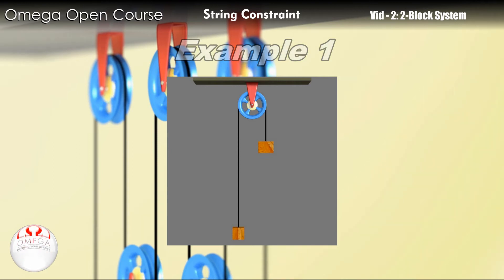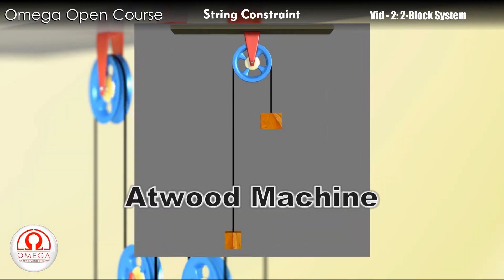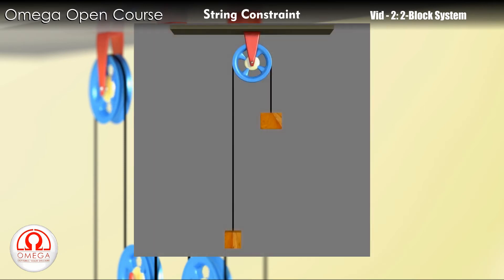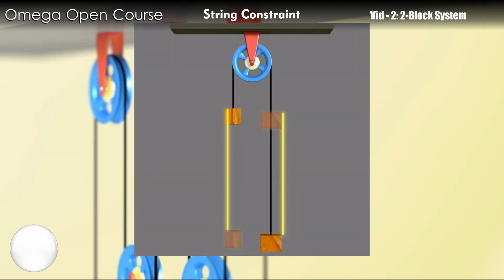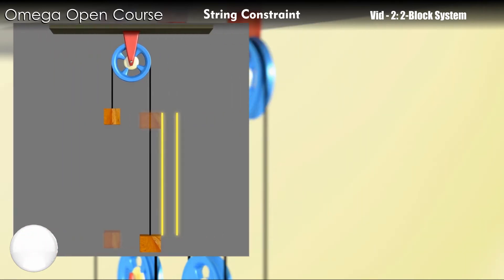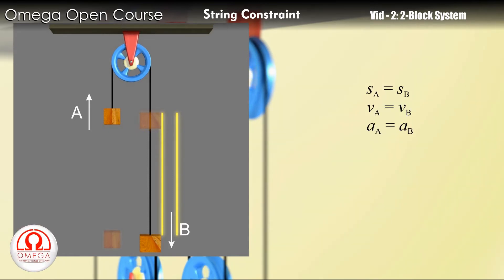For example, consider this simple setup. This setup is called an Atwood machine. When this system is released, the heavier block will move down while the lighter block will move up. Since the length of the string cannot change, the lighter block must move up by exactly as much as the heavier block has moved down. Since both blocks move by the exact same distance, the speed and acceleration of both blocks must be equal at all instants. Thus, from string constraint, the displacement, velocity and acceleration of both blocks must always be equal in magnitude and opposite in direction.